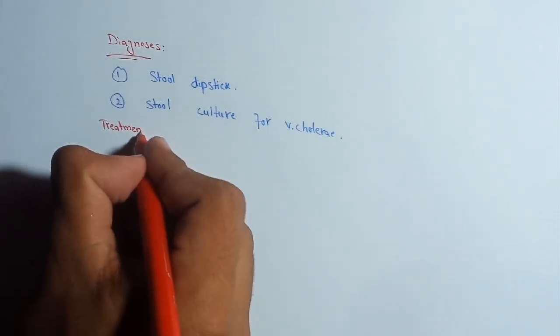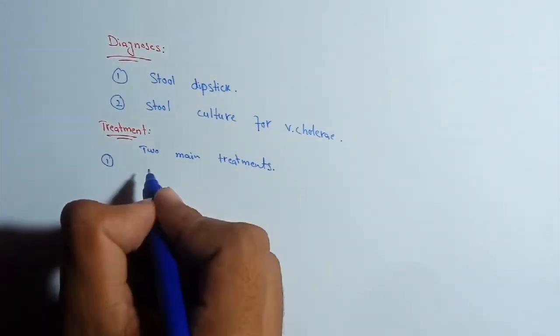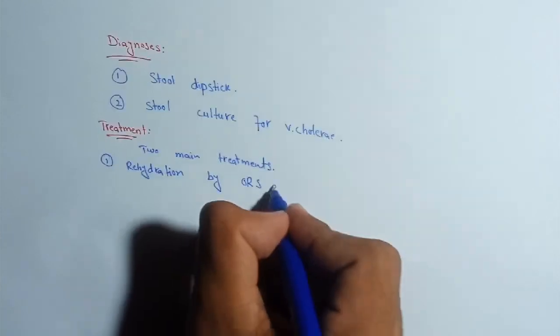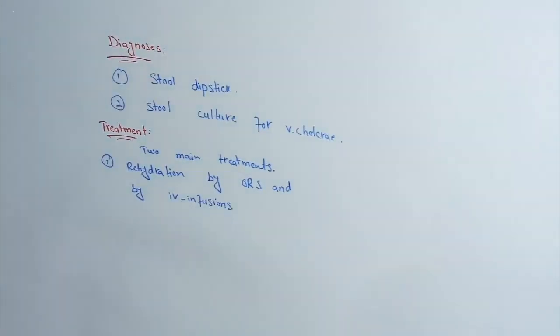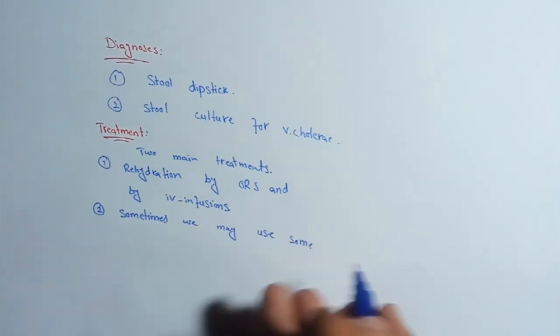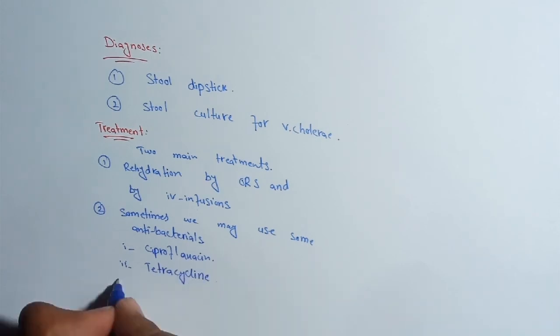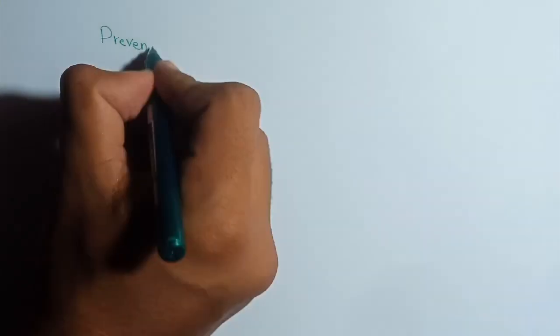Now treatment of cholera includes two main methods: rehydration by ORS and by IV infusions. Sometimes we may use some antibacterials like ciprofloxacin, tetracycline, and ofloxacin.